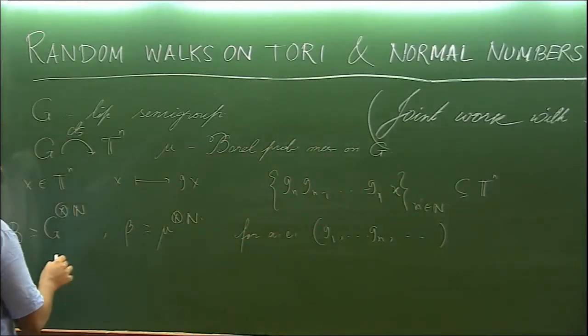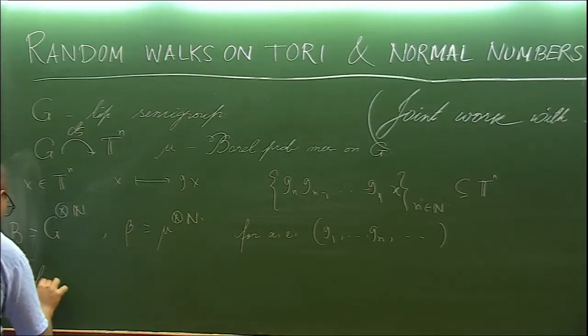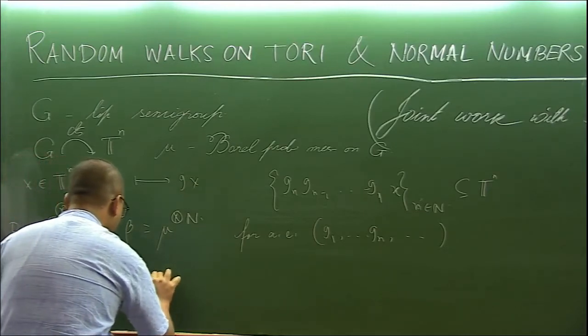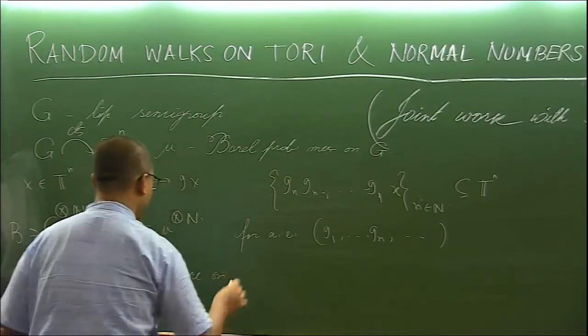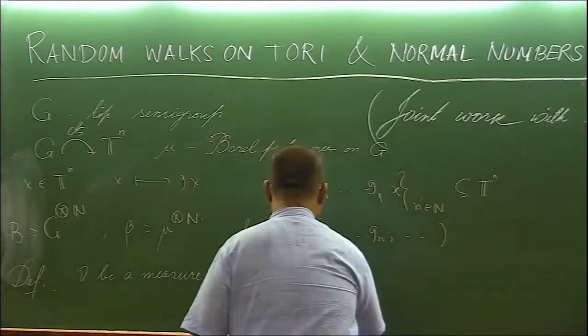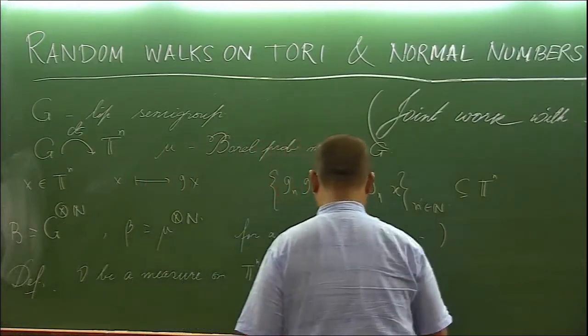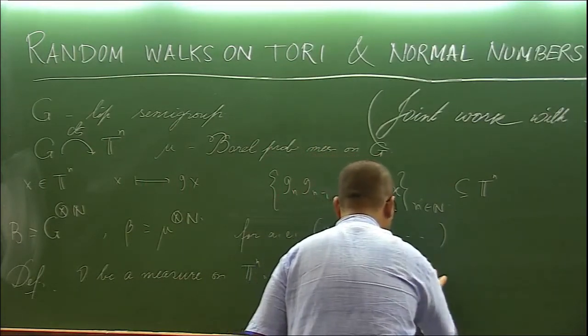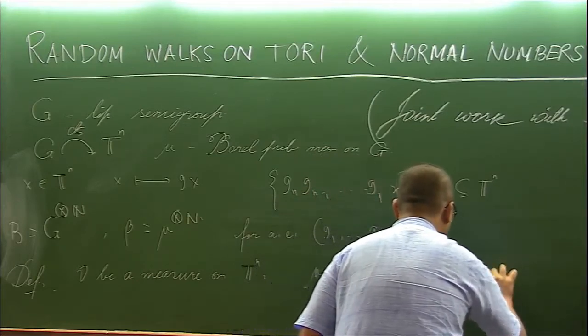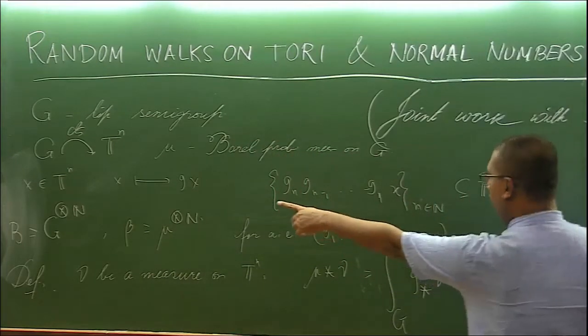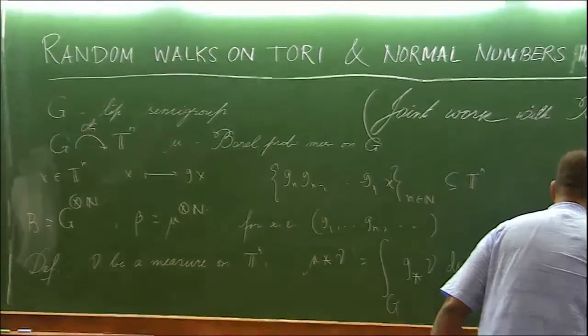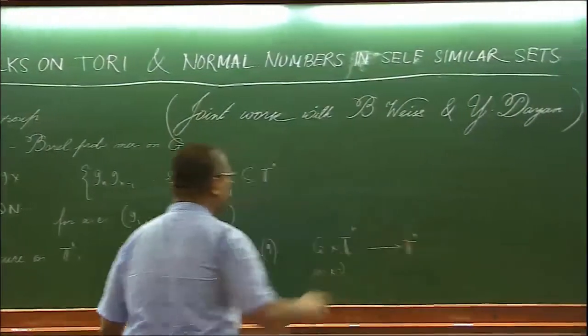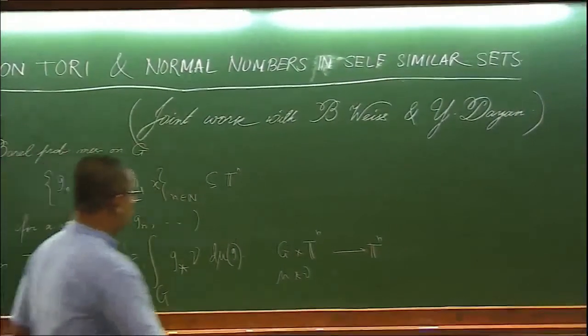Let's define for a measure, we define the convolution of mu and nu to be the measure which is defined in this way, which is precisely nothing but I have a continuous map from G cross TN to TN. So equip this side with the product measure mu cross nu and then push this measure using the action map.